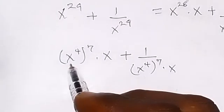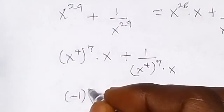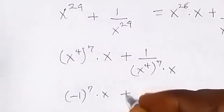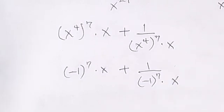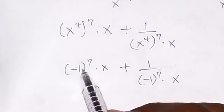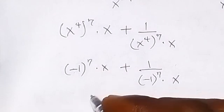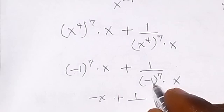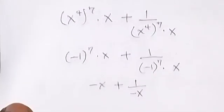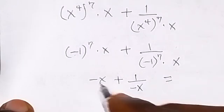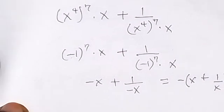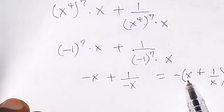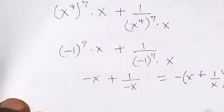Substituting, we have minus 1 raised to the power 7 times x, plus 1 over minus 1 raised to the power 7 times x. Since minus 1 to the power 7 is minus 1, this becomes minus x plus 1 over minus x. Factoring out minus 1, we get minus times the bracket x plus 1 over x.